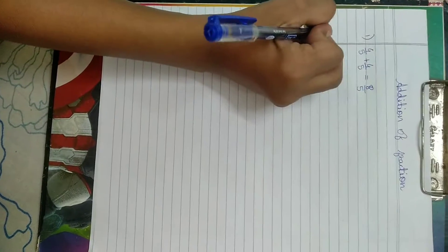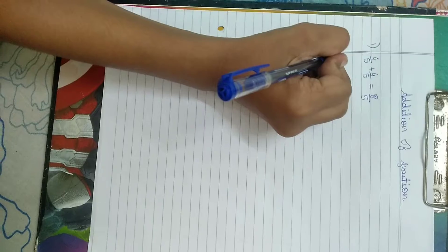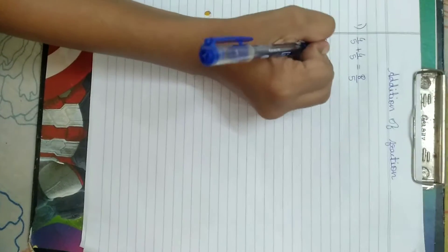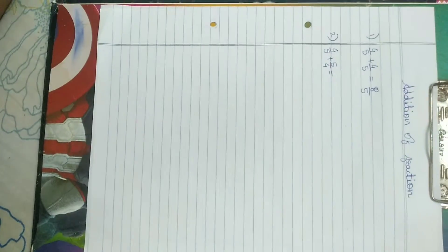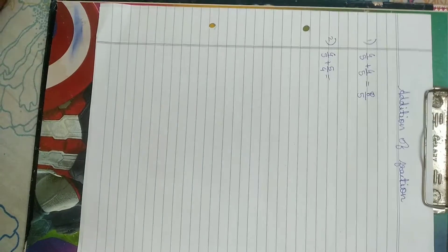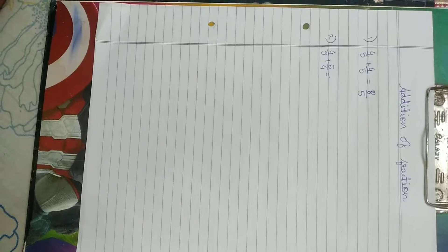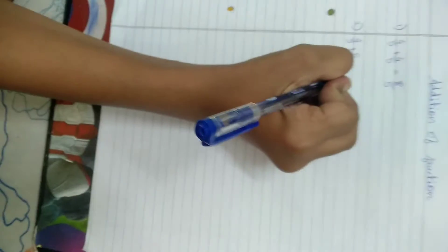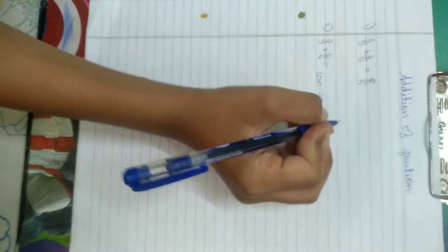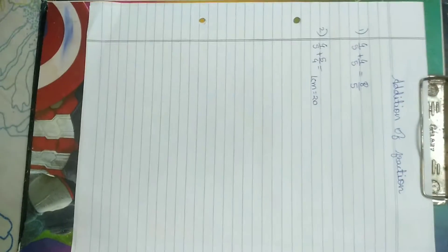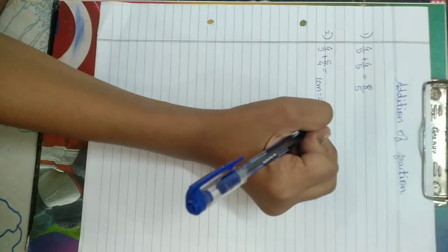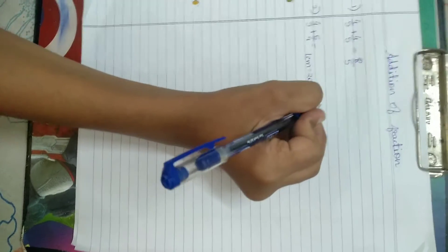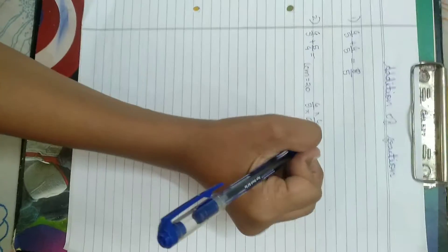So now, 4 by 5 plus 5 by 4. Now the denominators are not same. So we have to find the LCM of 5 and 4. The LCM of 5 and 4 is 20. And now we have to make these denominators same. So we have to multiply these both numbers. 5 times what equals 20? 4. So now we will multiply it by 4 by 4.